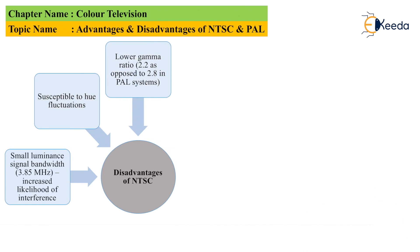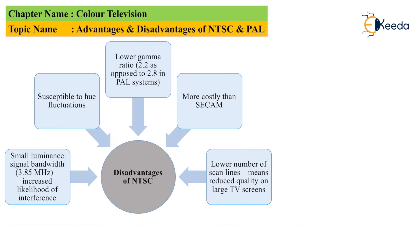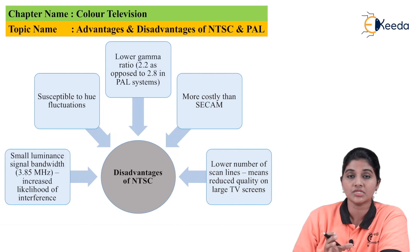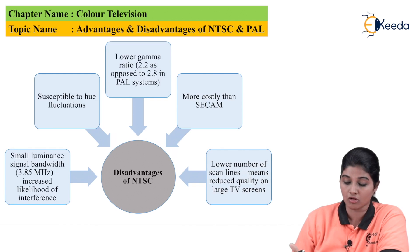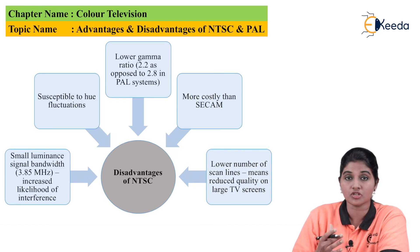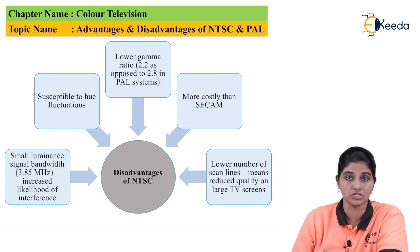The next disadvantage is a lower gamma ratio of 2.2, whereas the gamma ratio provided by the PAL system is 2.8. The next disadvantage is that it is more costly as compared to the French standard SECAM. The last disadvantage is a lower number of scan lines, which reduces the quality on large TV screens — the lower number of lines affects the quality of the picture on large screens.